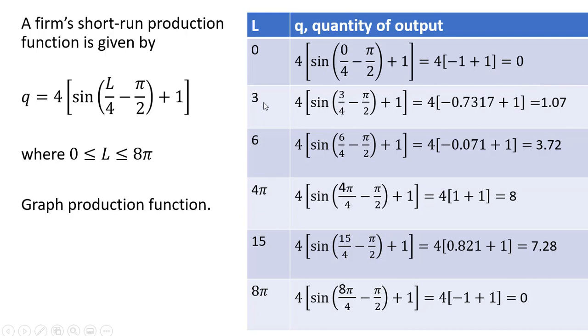And then if we put L equals 3 into our production function, the sine of 3 fourths minus π divided by 2 is minus 0.7317. And then we got the plus 1 here. Doing the math, we get an output of 1.07 units, and we can see the rest of these values here.